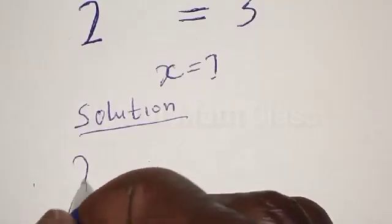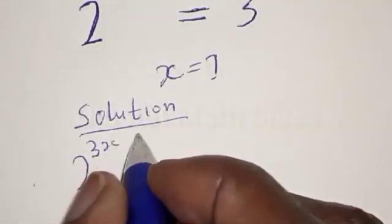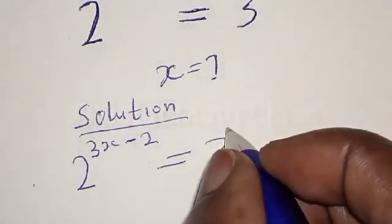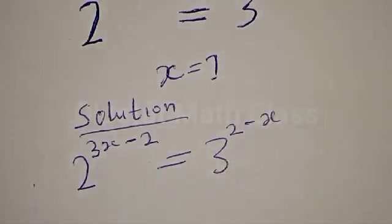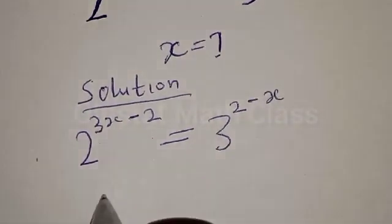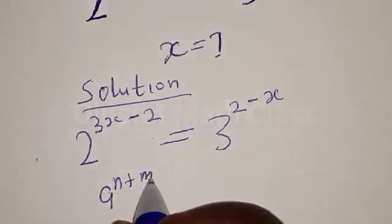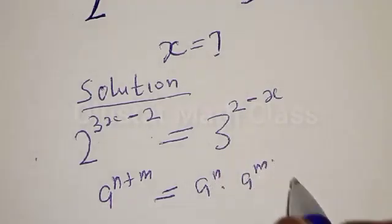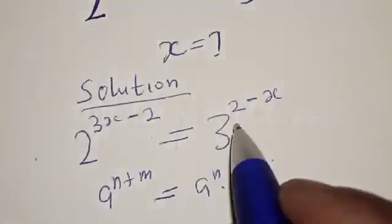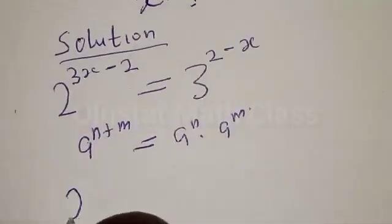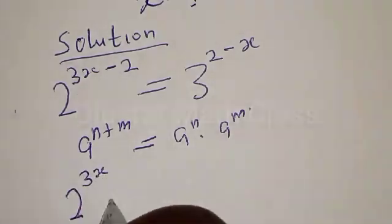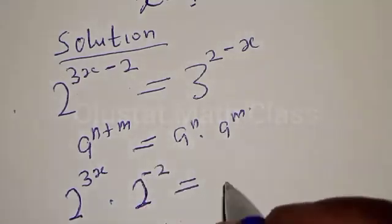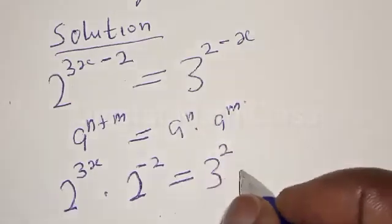We have 2 raised to power 3x minus 2 is equal to 3 raised to power 2 minus x. Remember, if you have a raised to power n plus m, that is the same as a raised to power n multiplied by a raised to power m. We are going to apply this method. So we have 2 raised to power 3x multiplied by 2 raised to power minus 2, equal to 3 squared multiplied by 3 raised to power minus x.